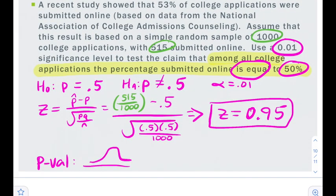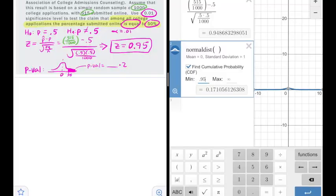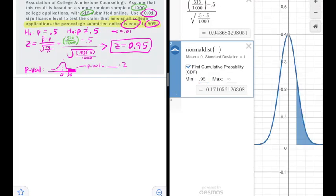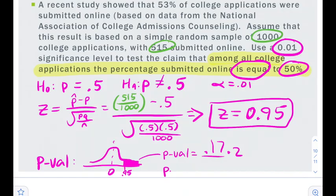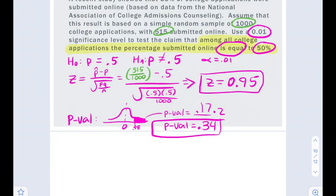Now that I have my test statistic, I'm ready to find my p-value. I start with my picture and put that 0.95 on the axis. It's a not equal to problem, so I'm going to shade to the smaller side which is the right, and I'm going to make sure that I multiply whatever that p-value is by two. Well, decimals tells me that shading to the right gives me an initial p-value of 0.17, which multiplied by two is going to give me a p-value of 0.34.